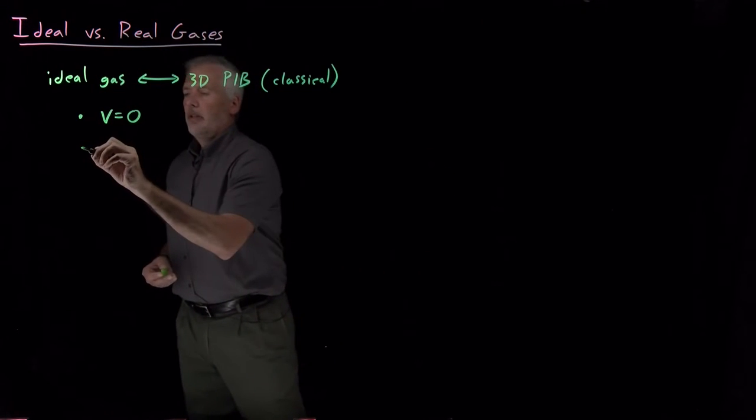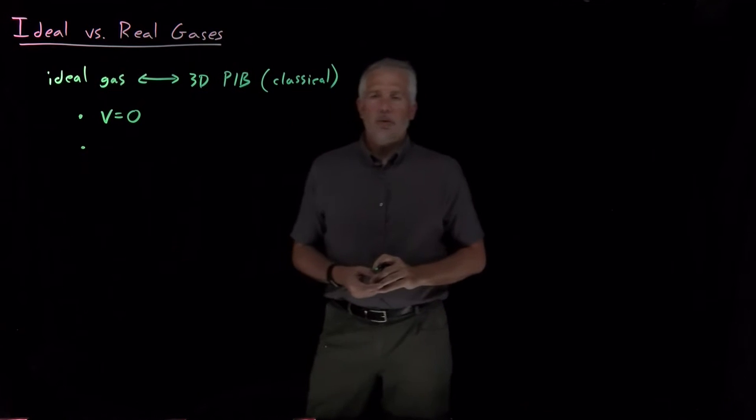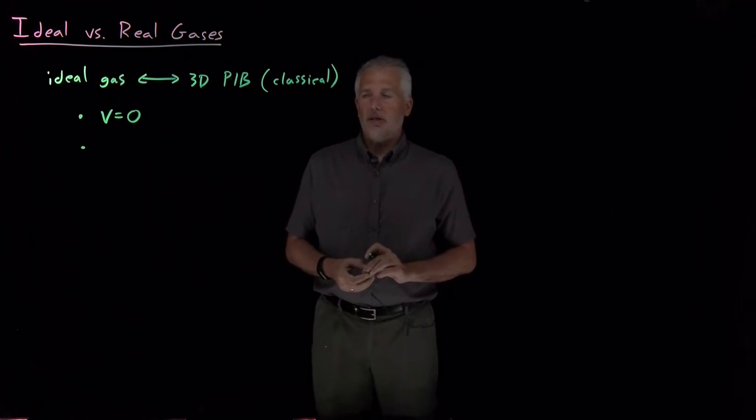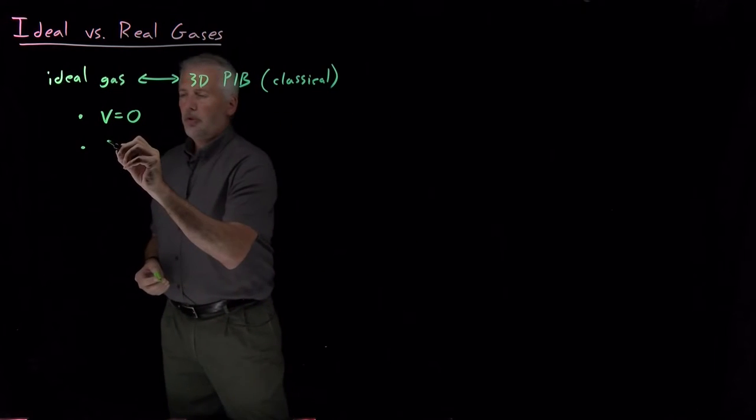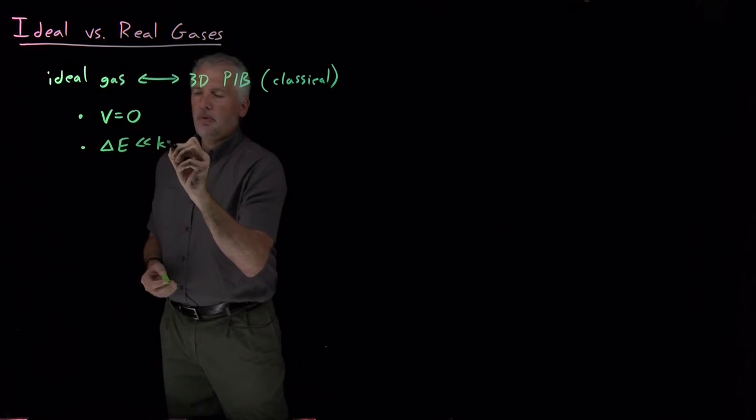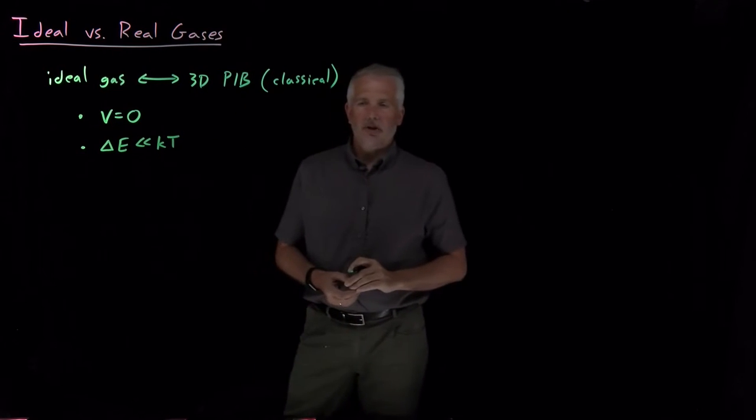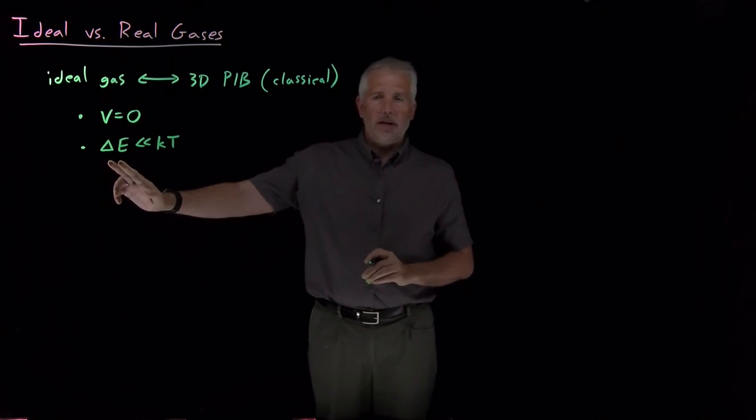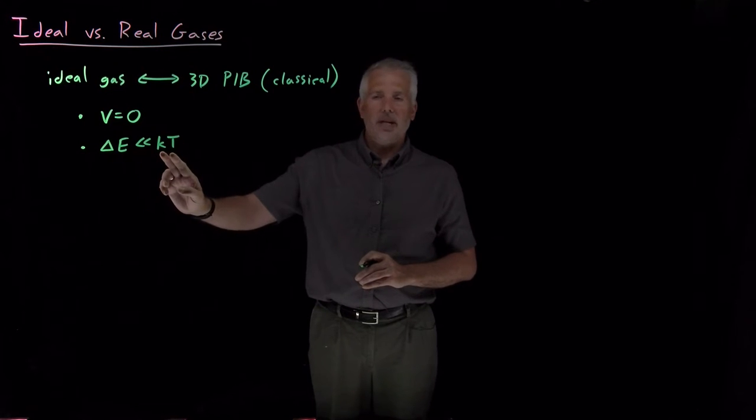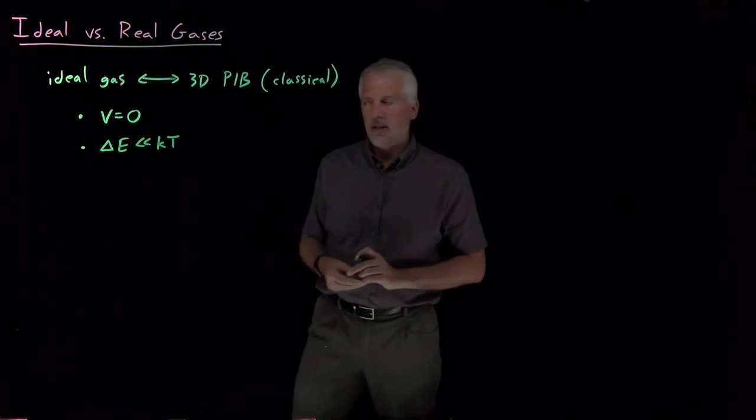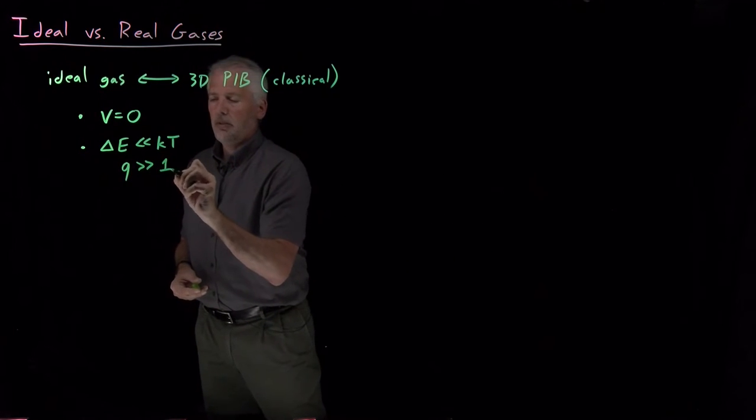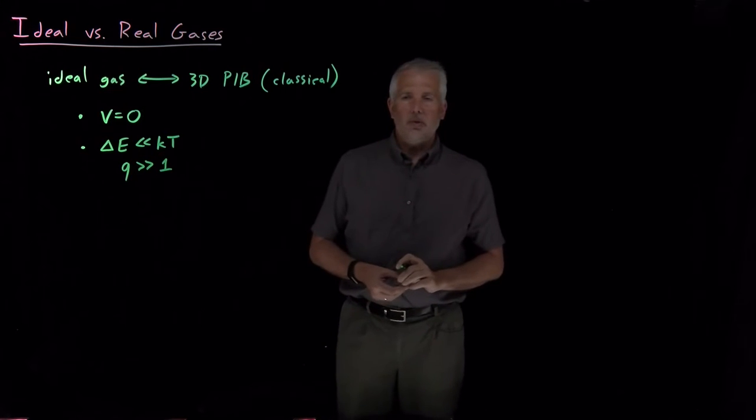The other important set of assumptions that we made related to this assumption that we're in the classical limit. That is true anytime either the spacing between the energy levels is small enough that we don't really have to worry about them being discretely spaced. When that energy level spacing is very small compared to kT, then there's many, many of those states that are occupied. That means the partition function is going to be typically much larger than one.